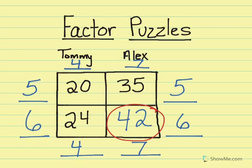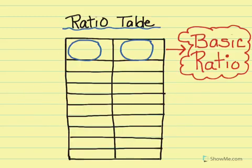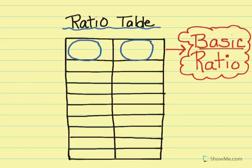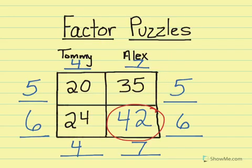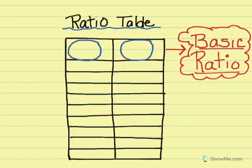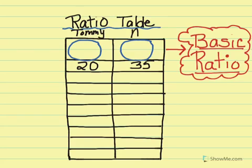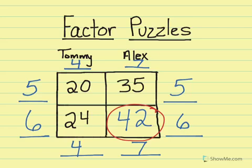I can take my factor puzzle and turn it into a ratio table. Here I've set up a ratio table. I'm going to write my values — my first row is going to have 20 and 35. We can label these as Tommy and Alex. I also know another row could be 24 and 42.